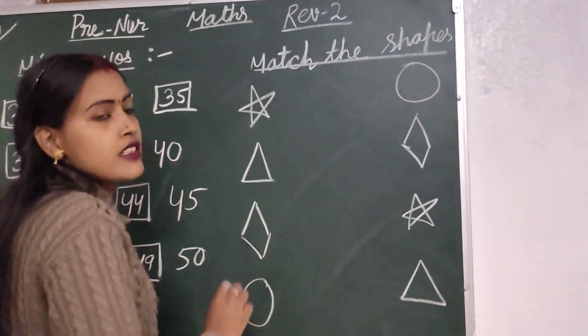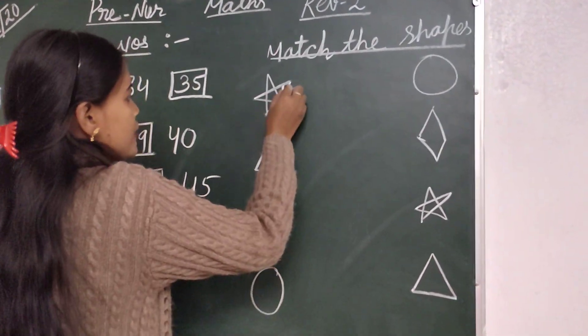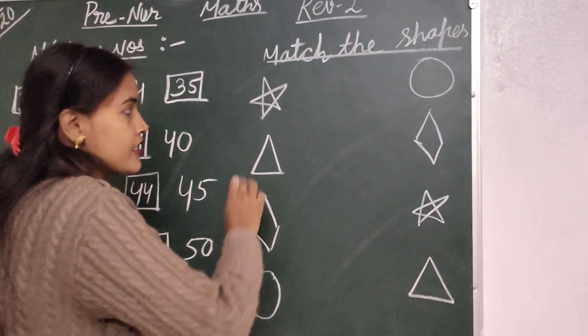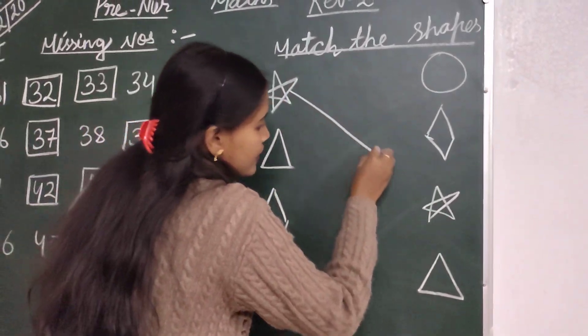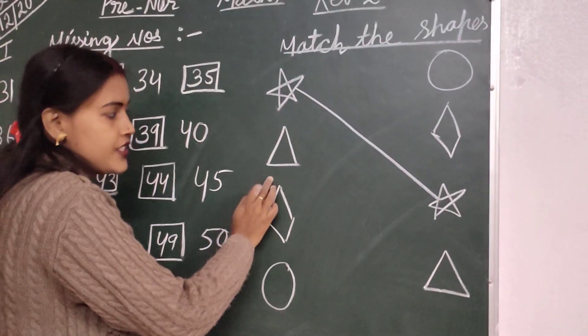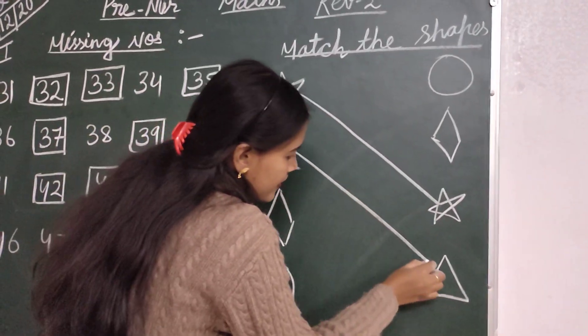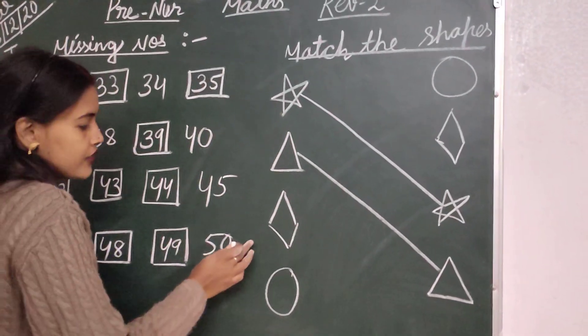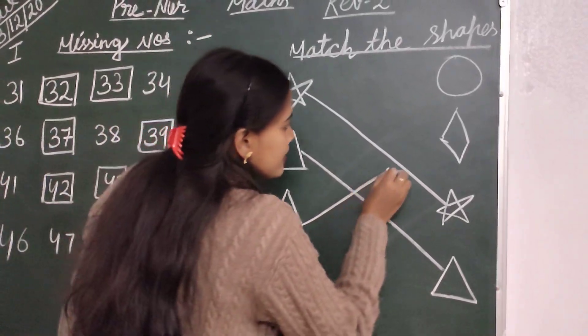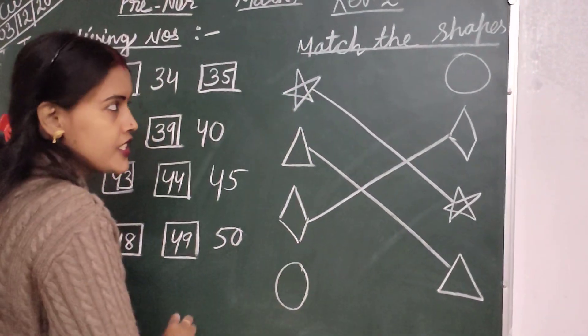Next, match the shapes. So children, first picture is star. Star. Next picture is triangle. Then third picture is diamond. Last picture is oval.